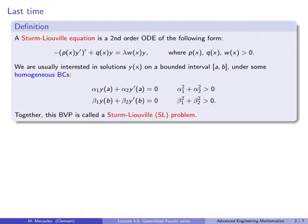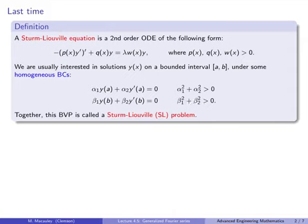We are usually interested in solutions to this equation on a bounded interval, say [A, B], under some homogeneous boundary conditions. So this is like alpha_1 Y(A) plus alpha_2 Y'(A) equals 0, and beta_1 Y(B) plus beta_2 Y'(B) equals 0, where the alphas both can't be 0, and the betas also both can't be 0. Together, this boundary value problem is a Sturm-Liouville problem.